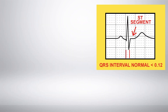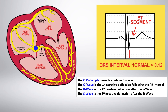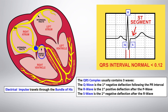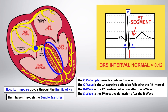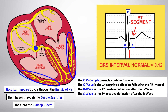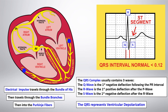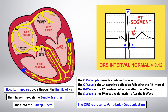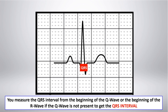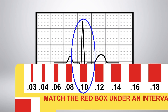The QRS complex usually contains three waves. The Q wave is the first negative deflection following the PR interval. The R wave is the first positive deflection after the P wave. The S wave is the first negative deflection after the R wave. From the AV node, the electrical impulse travels through the bundle of His, then through the bundle branches, then into the Purkinje fibers. The QRS represents ventricular depolarization. You measure the QRS interval from the beginning of the Q wave — or the beginning of the R wave if the Q wave is not present. Using the calibrated red boxes on the EKG badge, the QRS interval is .10, which is in normal range.